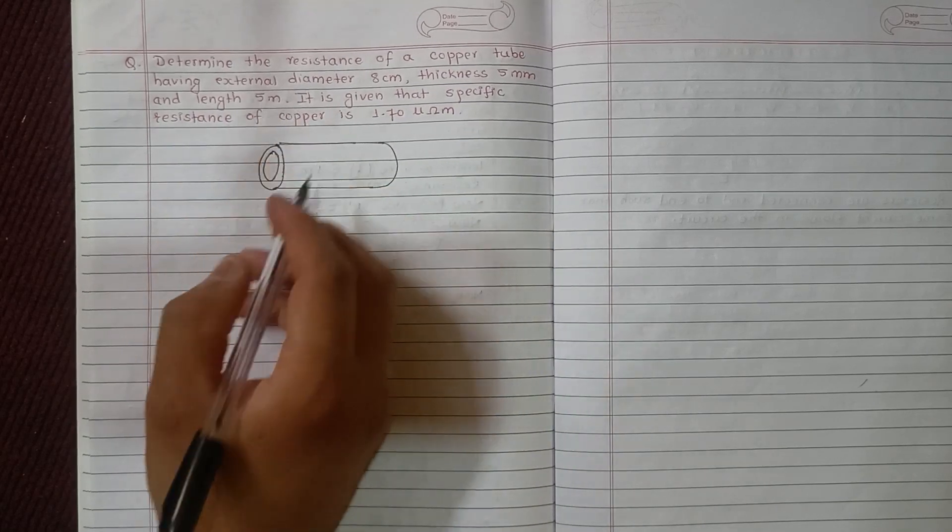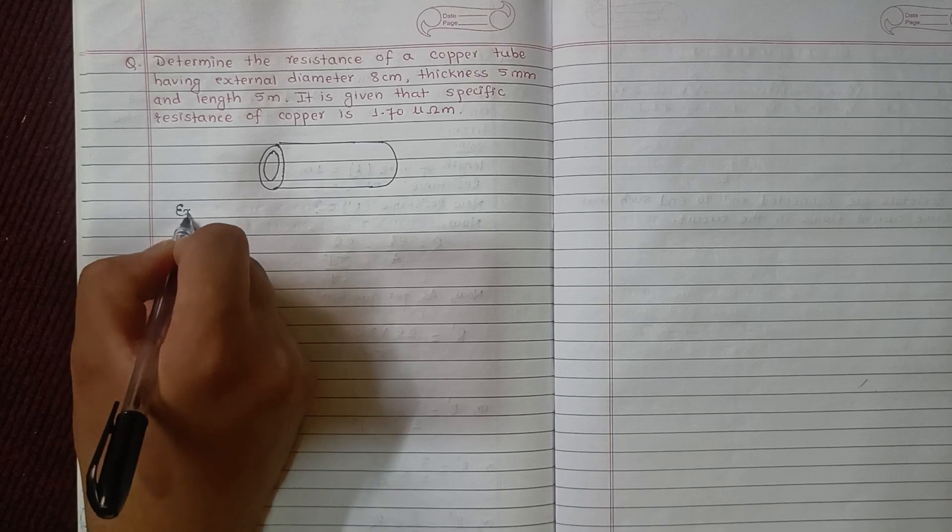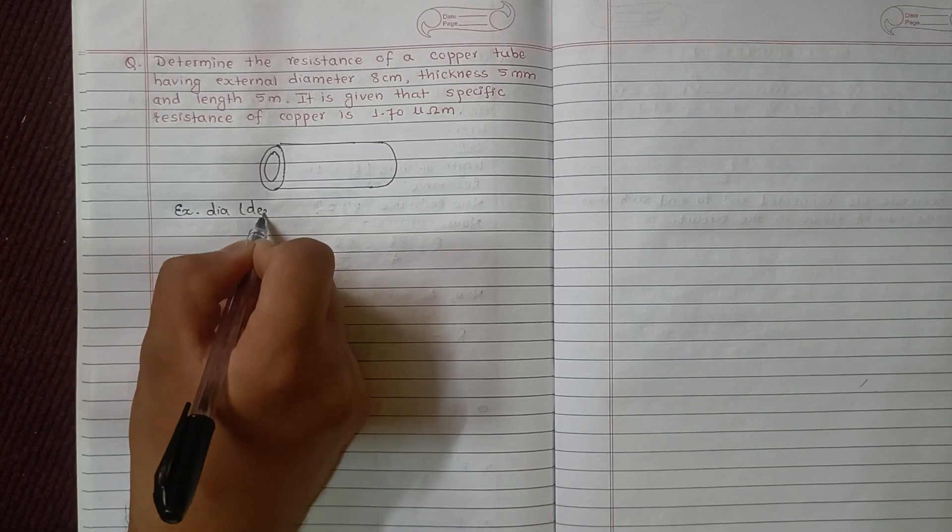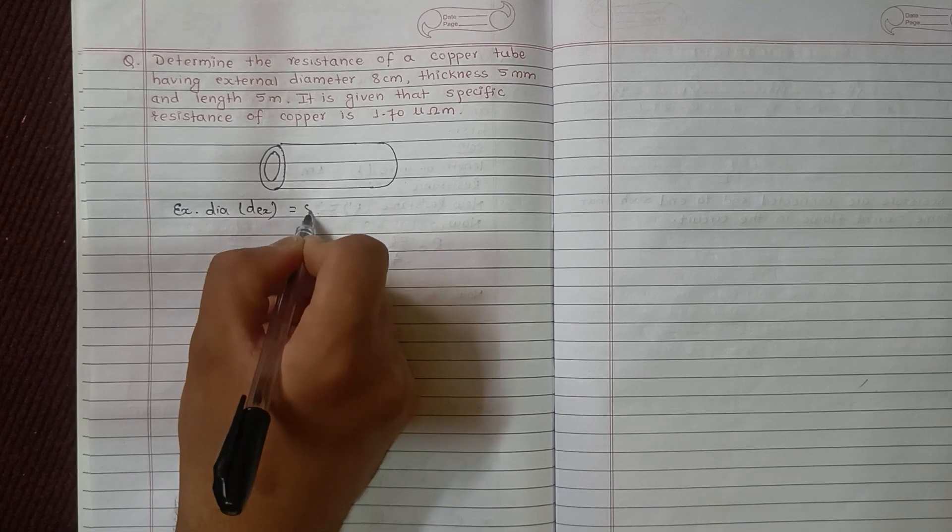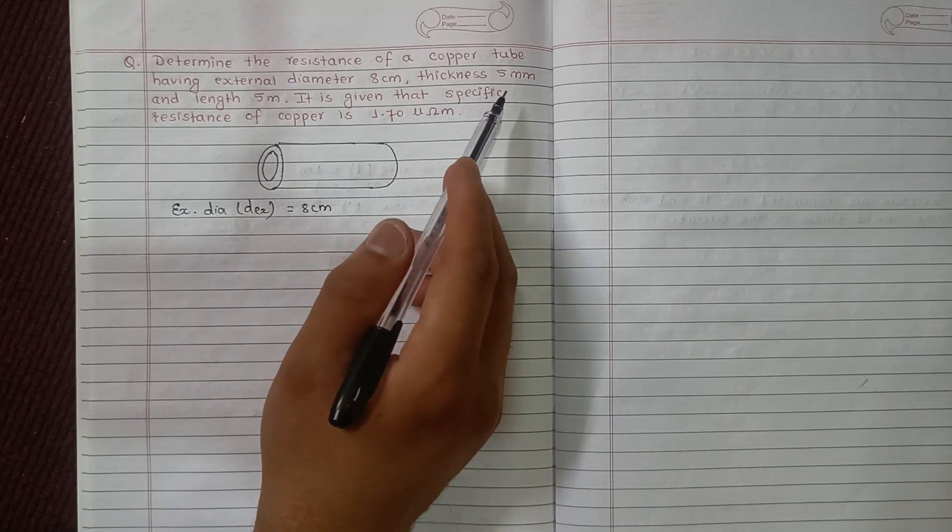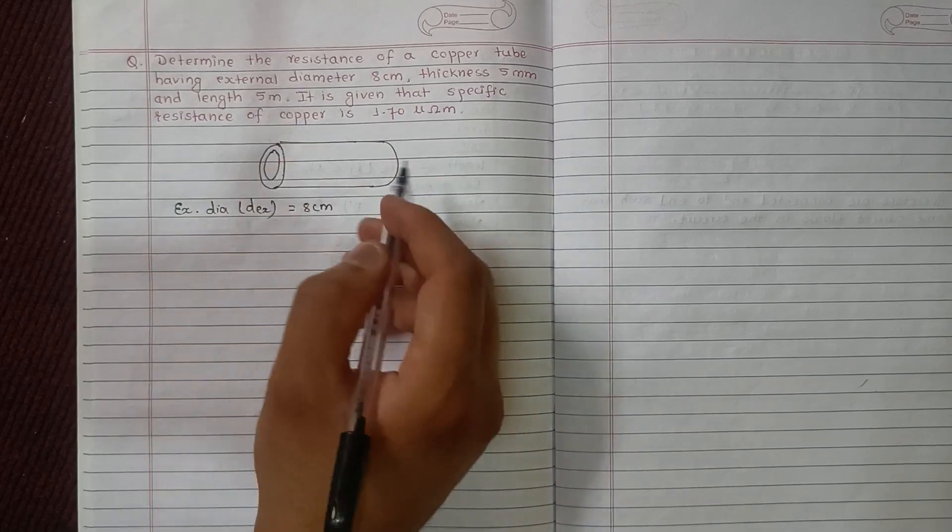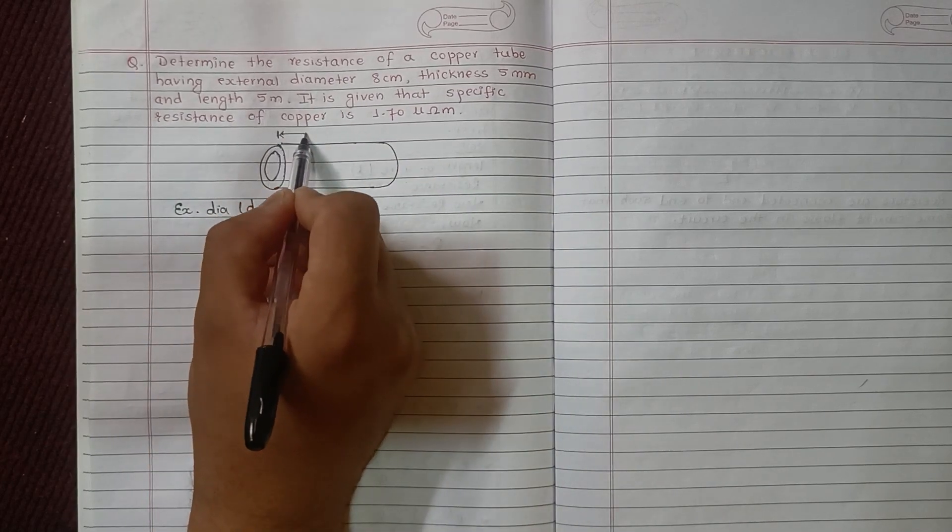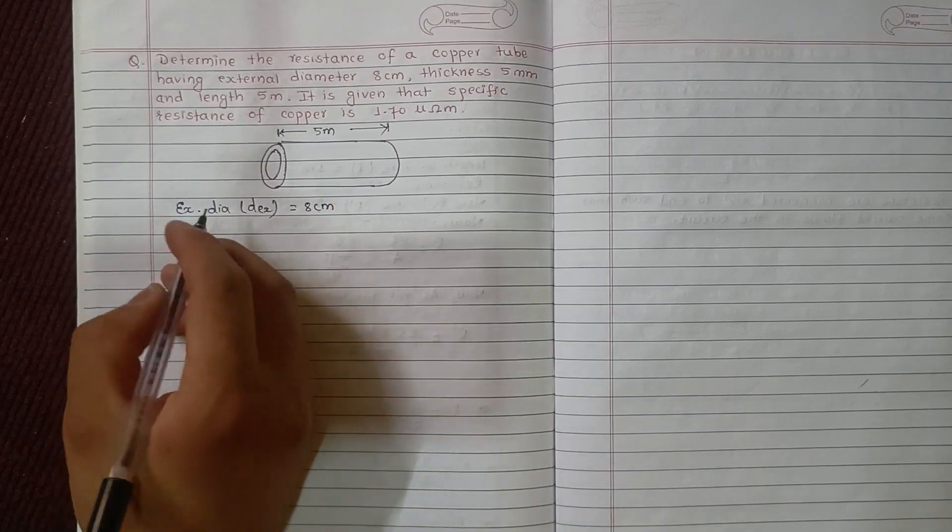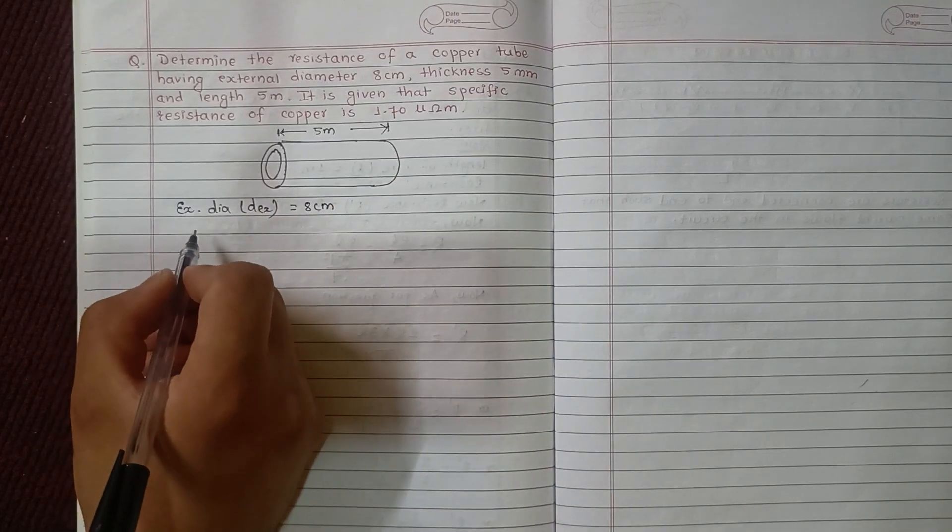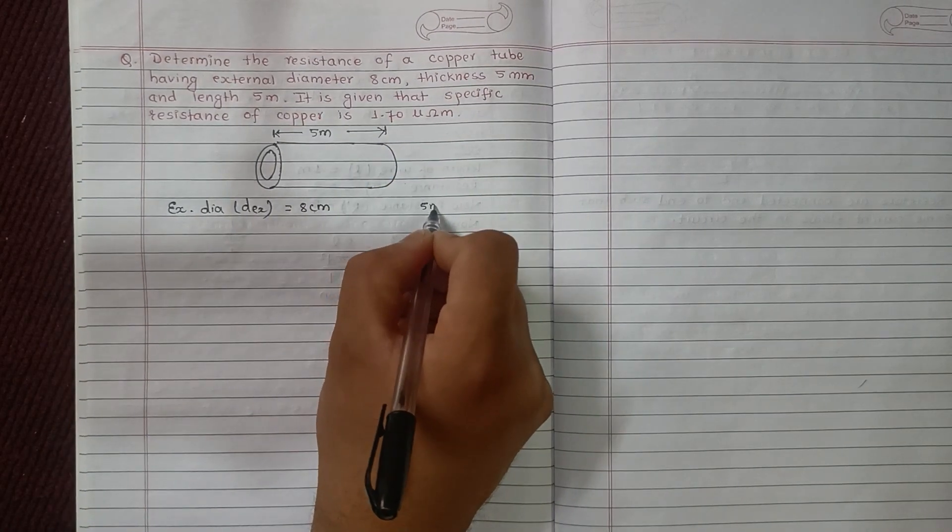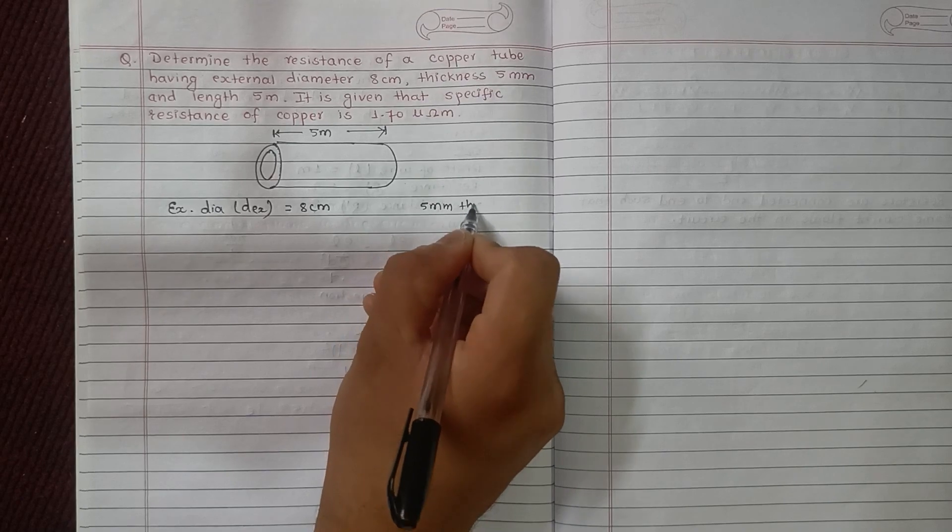The external diameter is 8 centimeter. The thickness is 5 mm, and the length is 5 meter. The thickness is 5 mm.